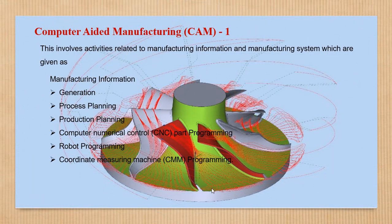Next is CAM — Computer Aided Manufacturing. There are two types: Manufacturing Information Systems and Manufacturing Systems. Manufacturing Information covers generation, process planning, production planning, CNC, robot programming, and CMM.